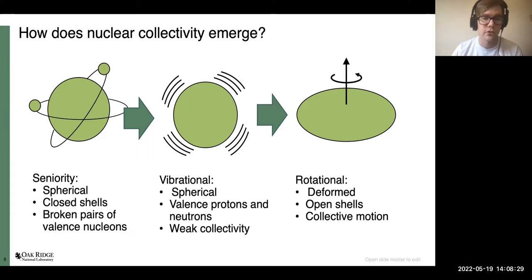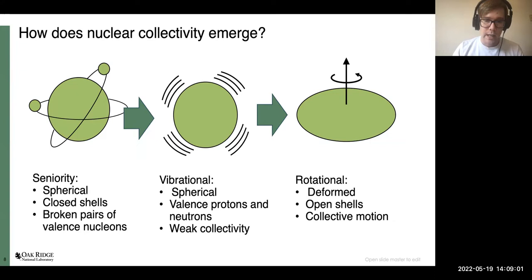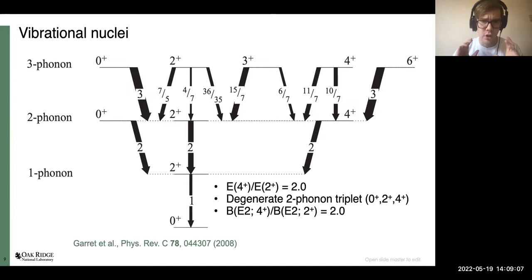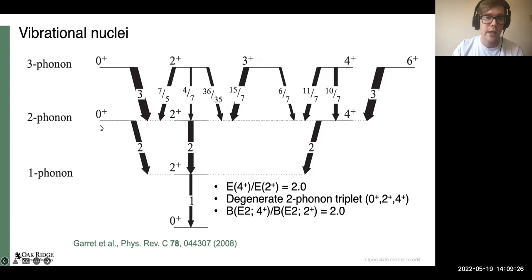The big question of emerging collectivity is what lies between these two extremes — seniority and rotational nuclei. For a long time the typical answer would have been spherical vibrations: weakly collective nuclei with perhaps a few valence protons or neutrons, like the cadmium or tellurium chains with only two valence protons. The vibrational scheme works by building up phonons. At the most basic level you have a one-phonon excitation — your first excited 2+ state — and adding a second phonon gives a degenerate triplet of states with spins 0+, 2+, and 4+.